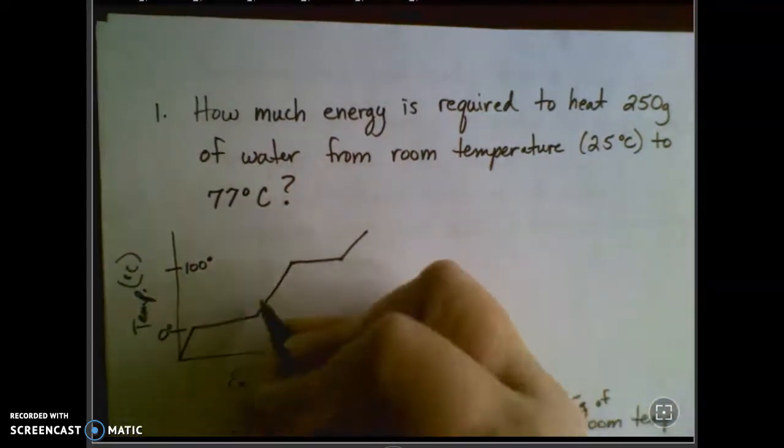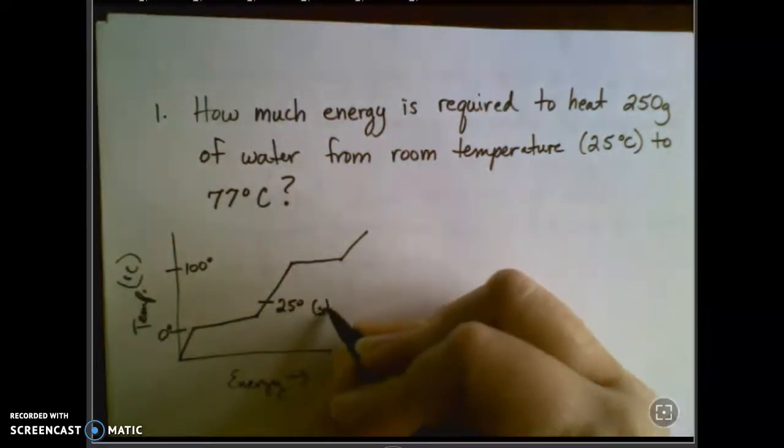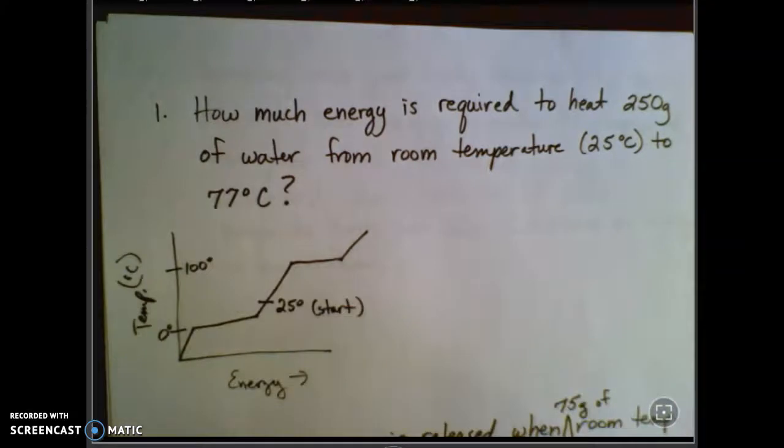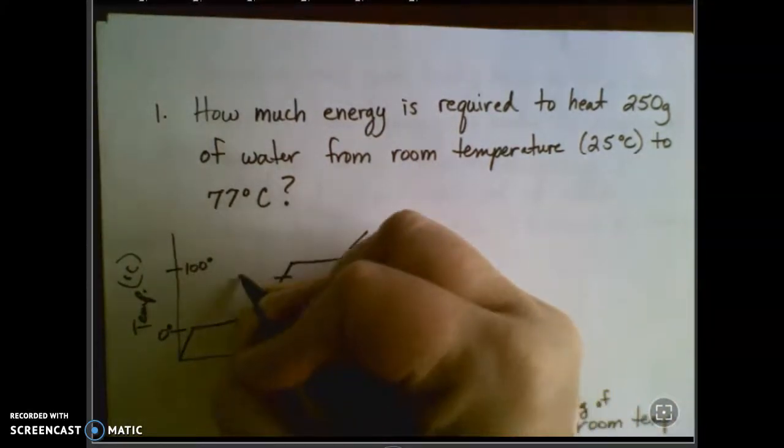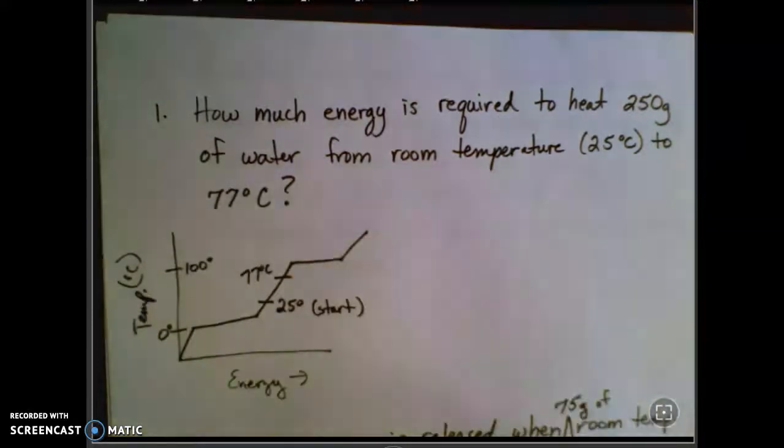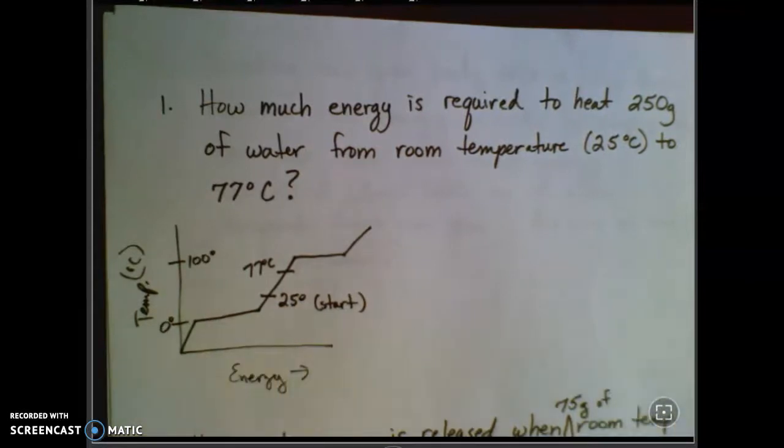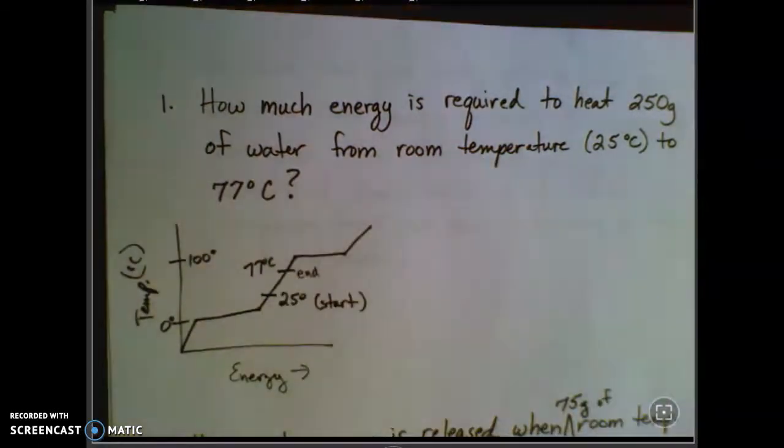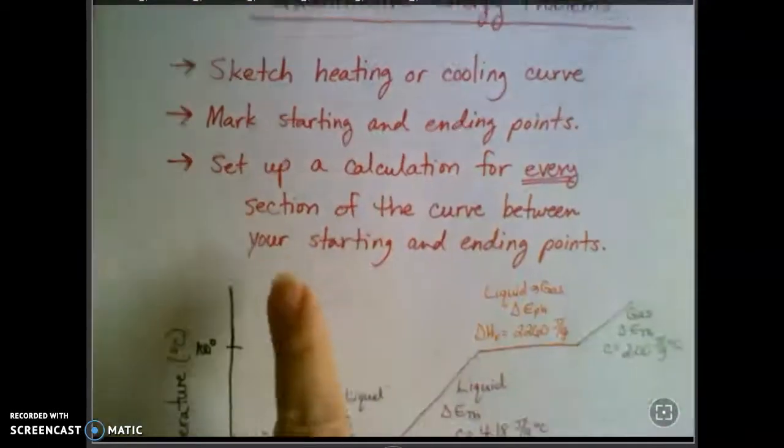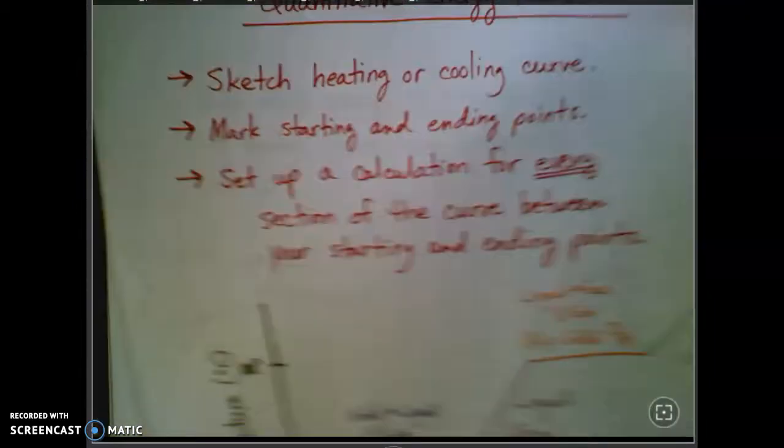I know that this is at zero, and this is at 100 degrees Celsius. So I'm just going to sketch this out. I start at 25 degrees, which is between zero and 100, but closer to zero, about right there. And I'm ending in this particular problem at 77 degrees, so that's about right there. Just to give you an idea of where you are. I know I'm still between zero and 100. So there's my start. This is my end point.